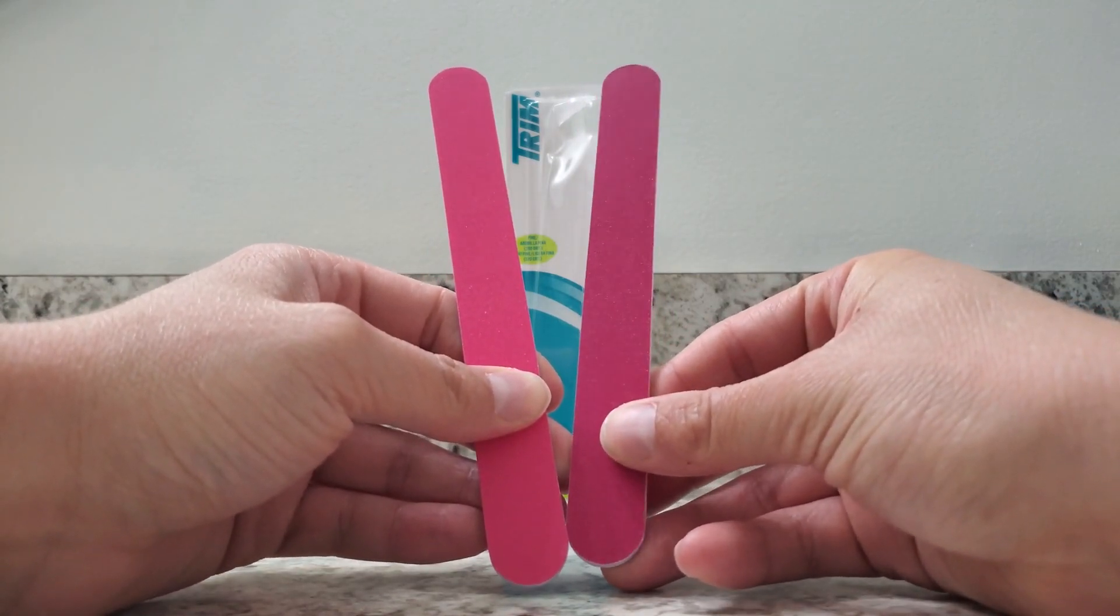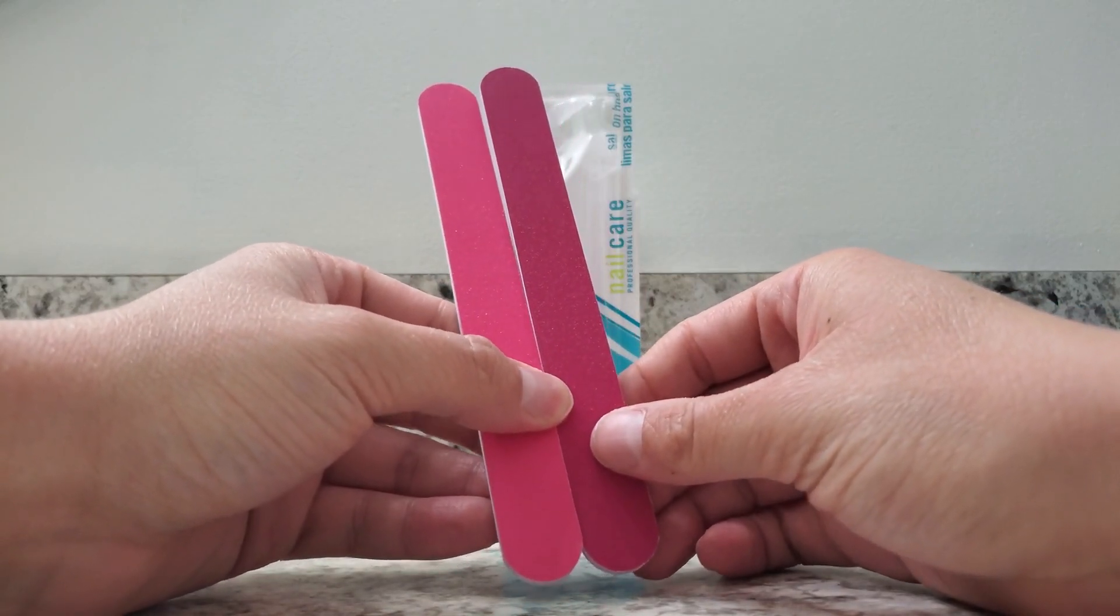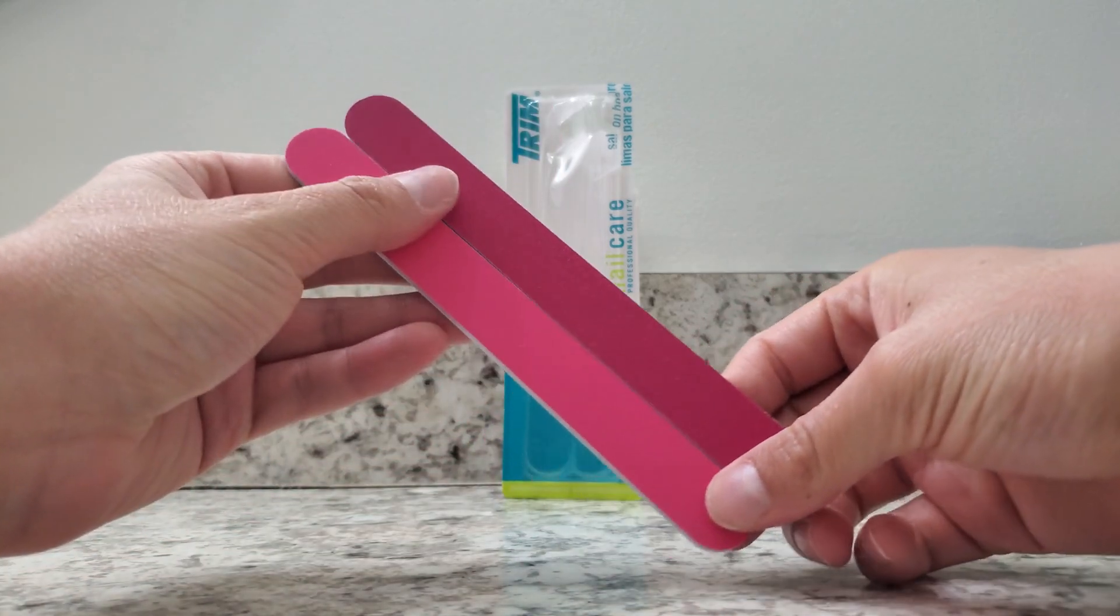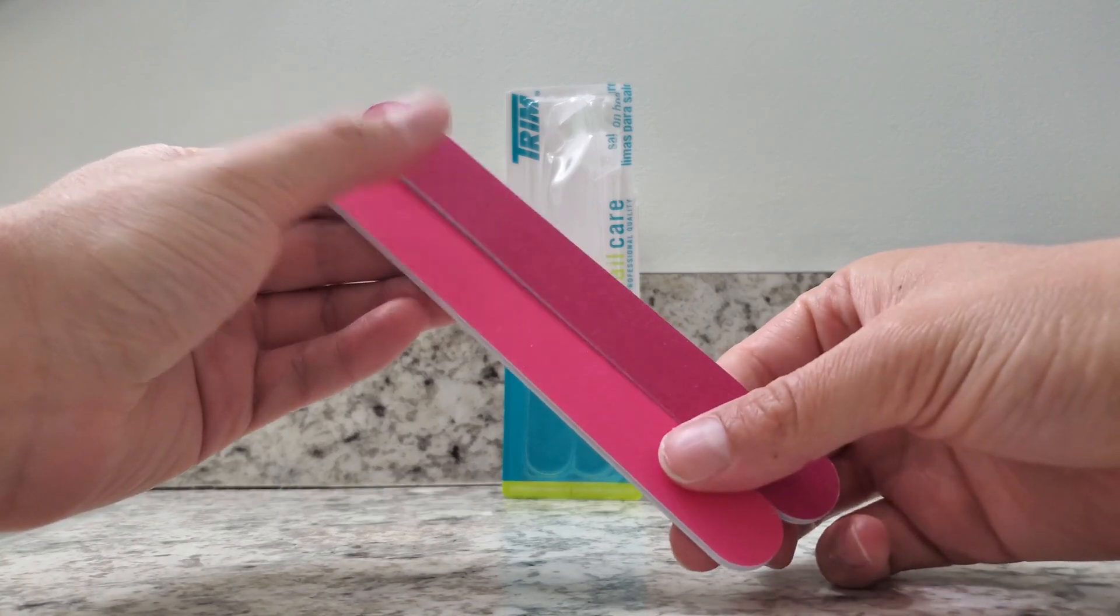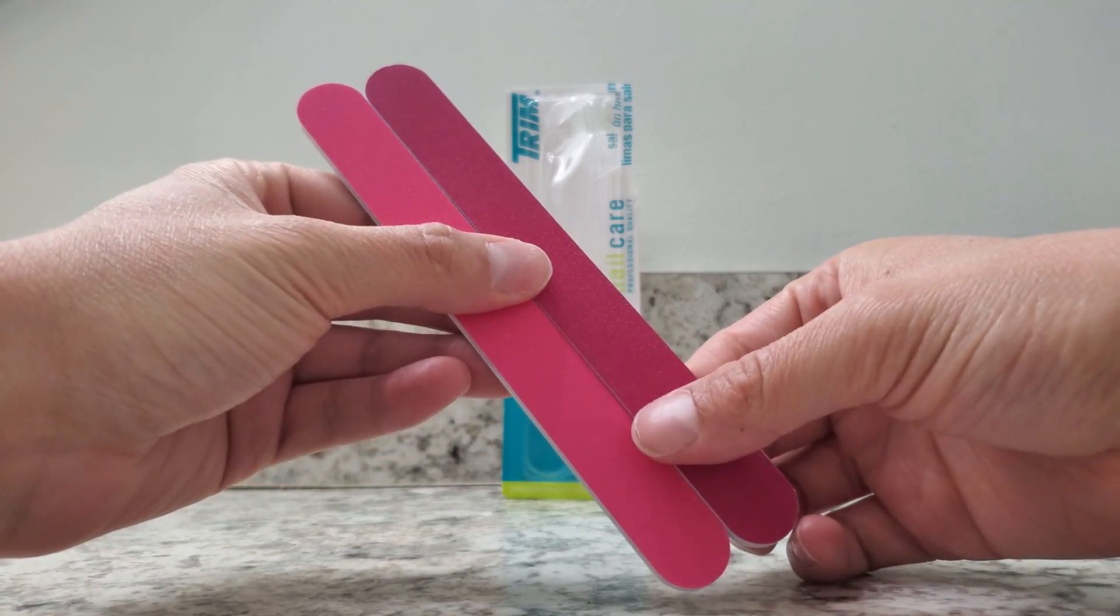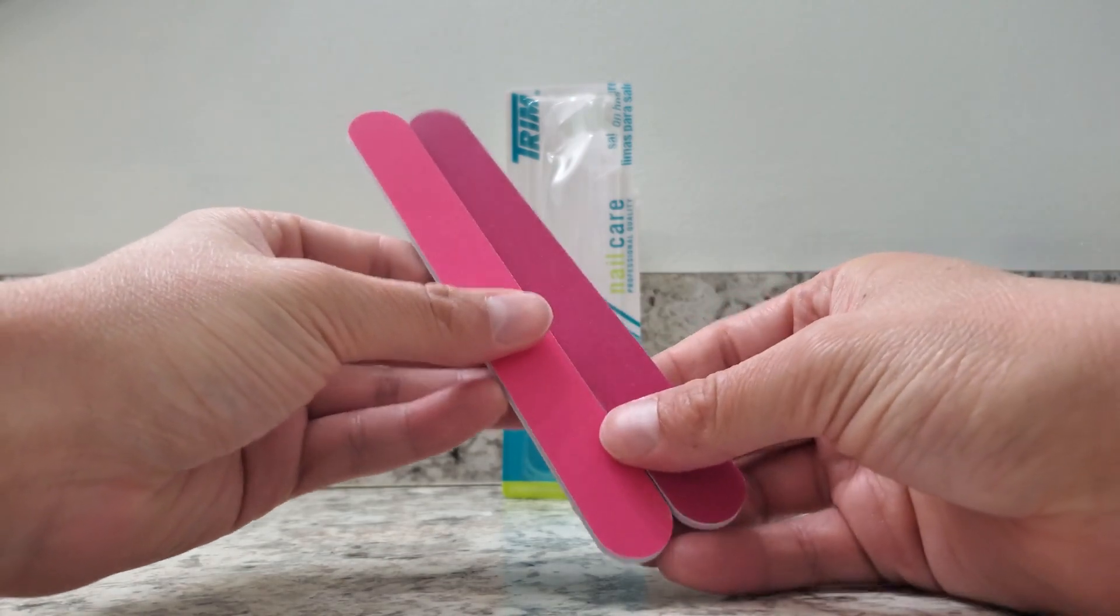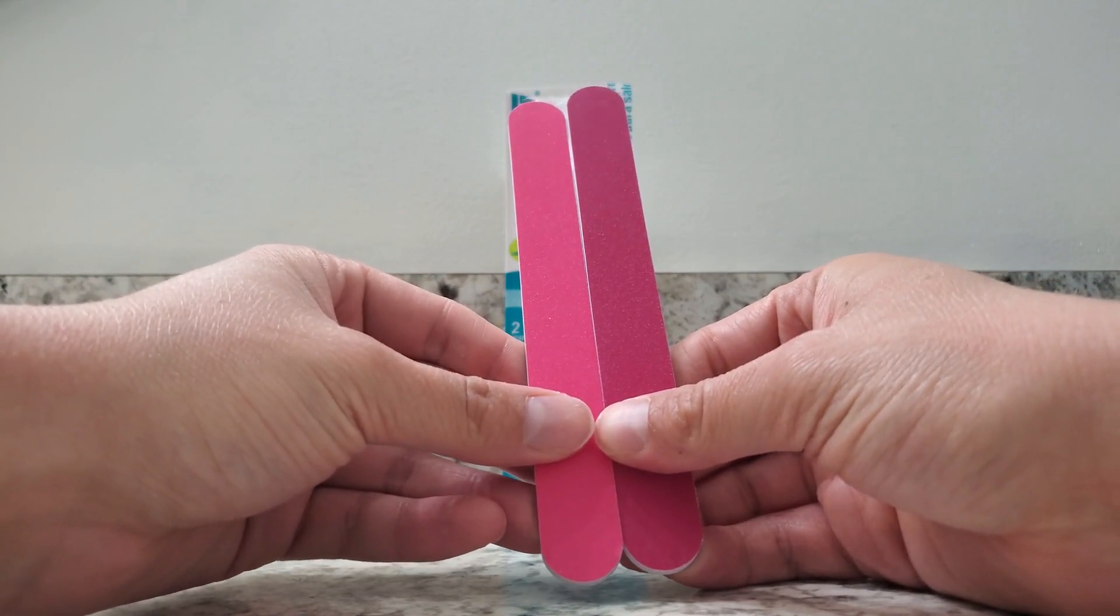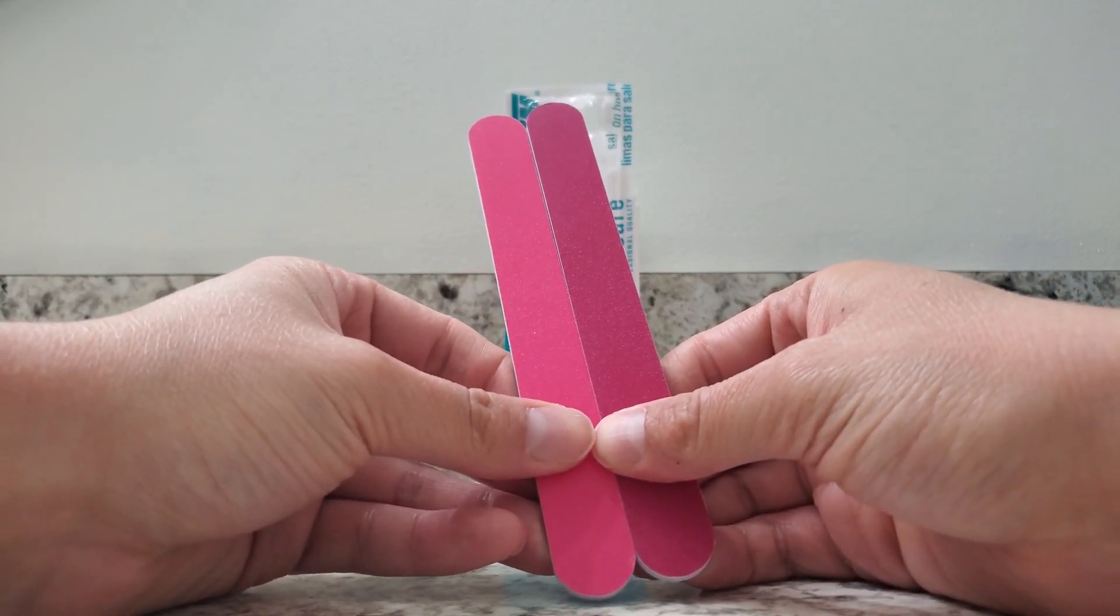But they both serve the same purpose. If you want to smooth out your nails, file your nails, this is a great thing to have in your purse or just inside like a carrying bag, travel case, whatever works best for you. The grit number is 280.0 and the material is emery.